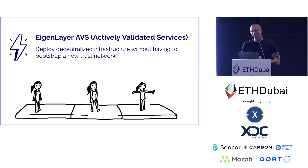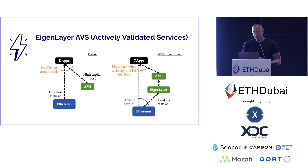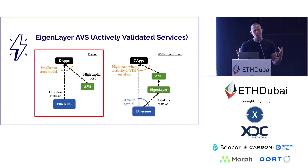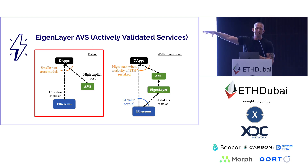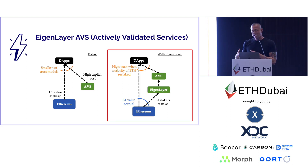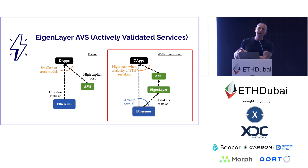If we look at the most common pattern for L1 networks, oracles, or any such network: you have Ethereum or any L1, the applications talking to that network, and then these other interoperability protocols like oracles that are completely separate. With Eigenlayer, you can take all of the security from Ethereum, use it to secure these new services. The people running these services can opt in to that security for a lot less cost and a lot less work.